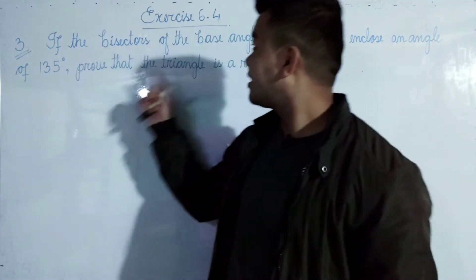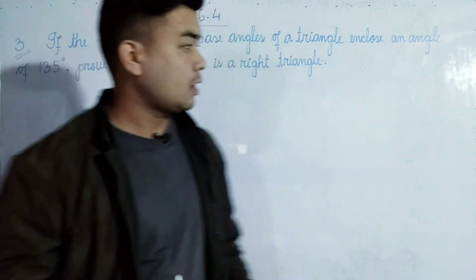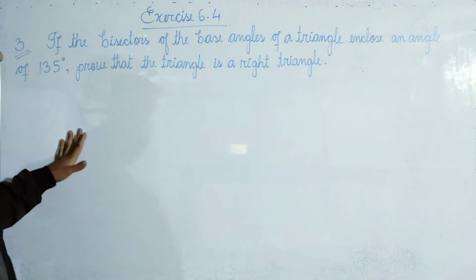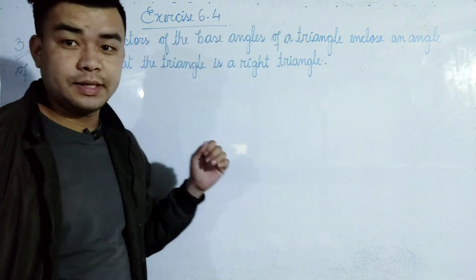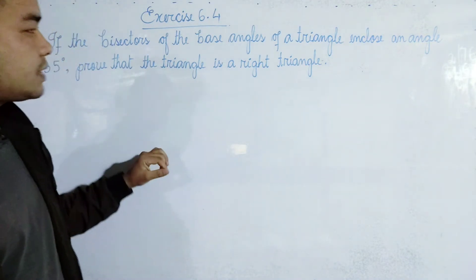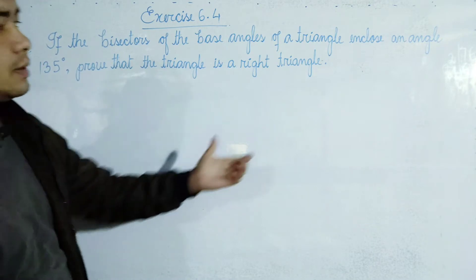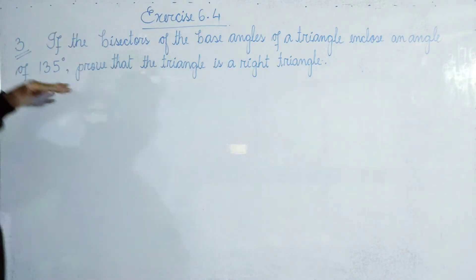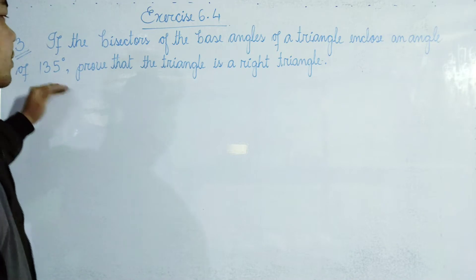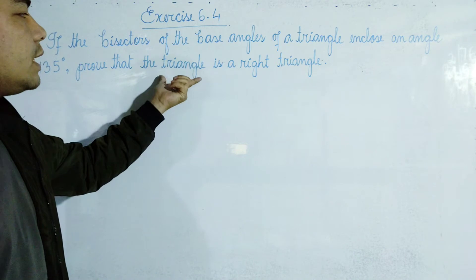This is Exercise 6.4, Question number 3. The question is: if the bisectors of the base angles of a triangle — the base angles of the triangle are the same.